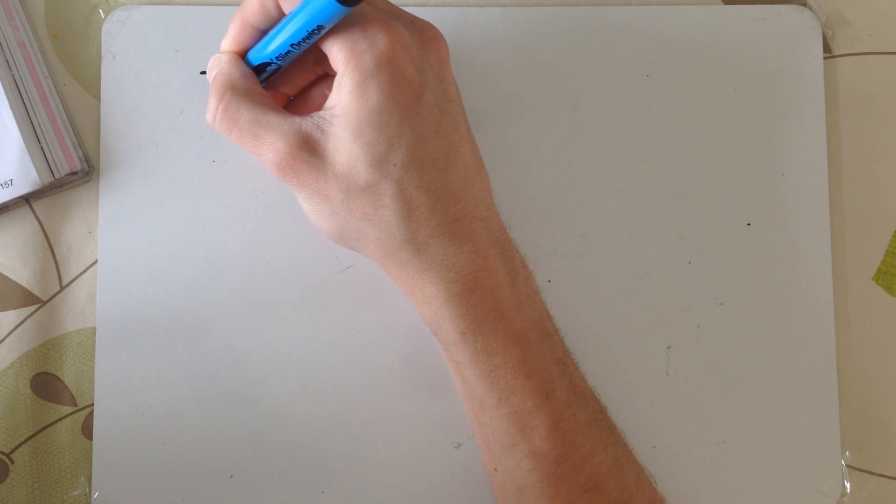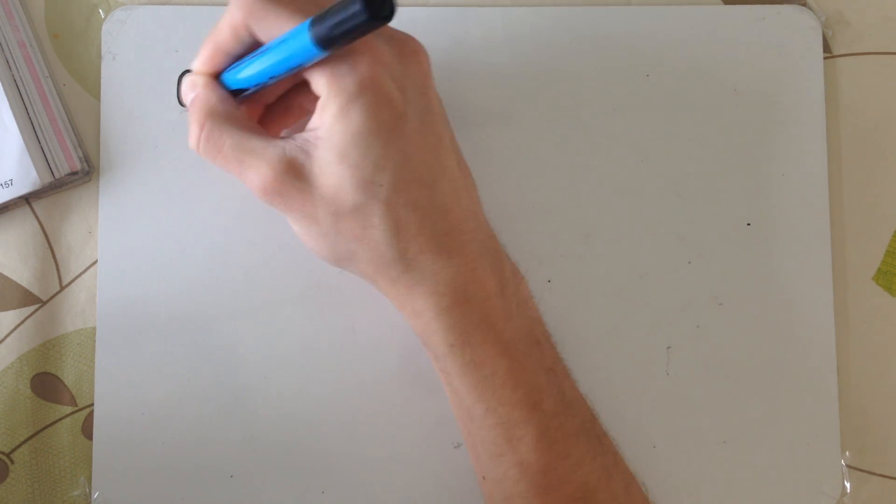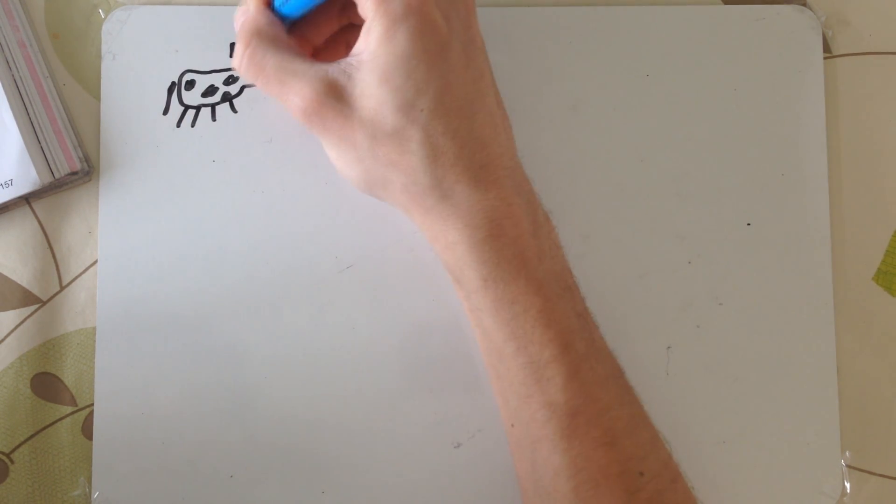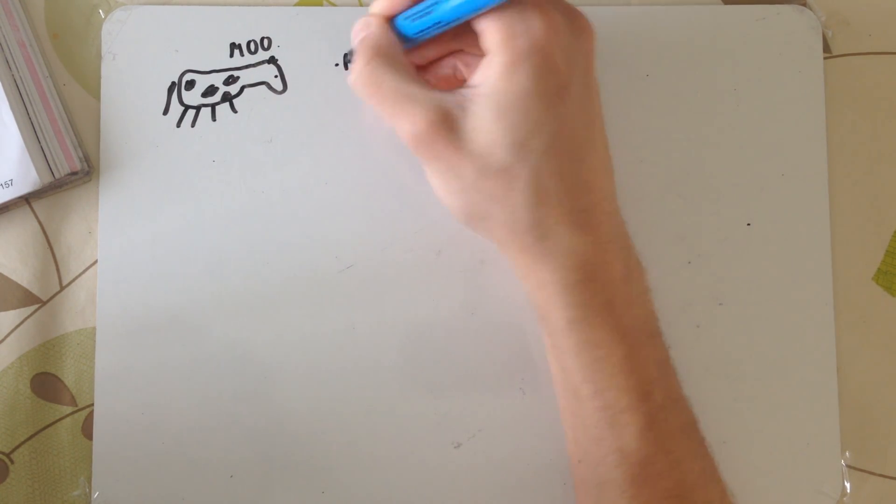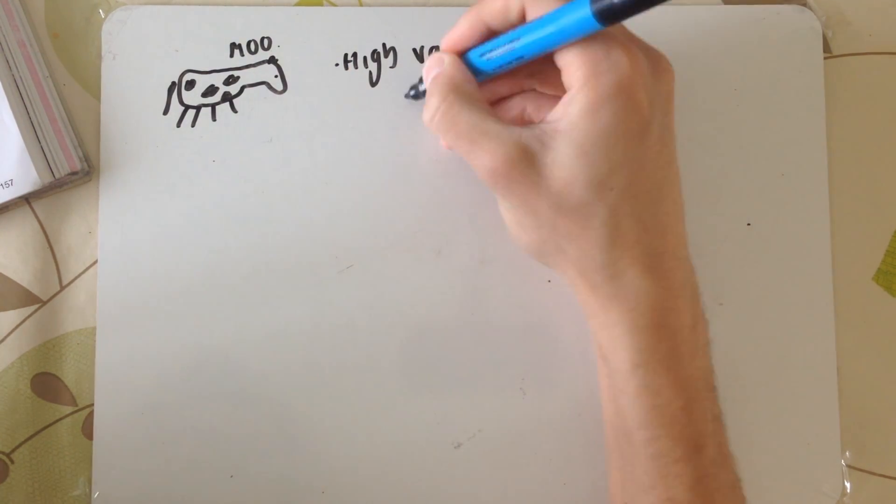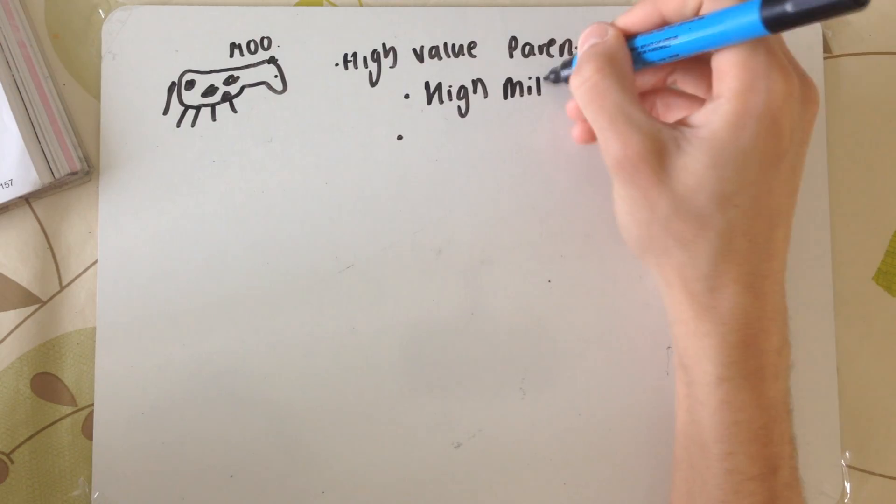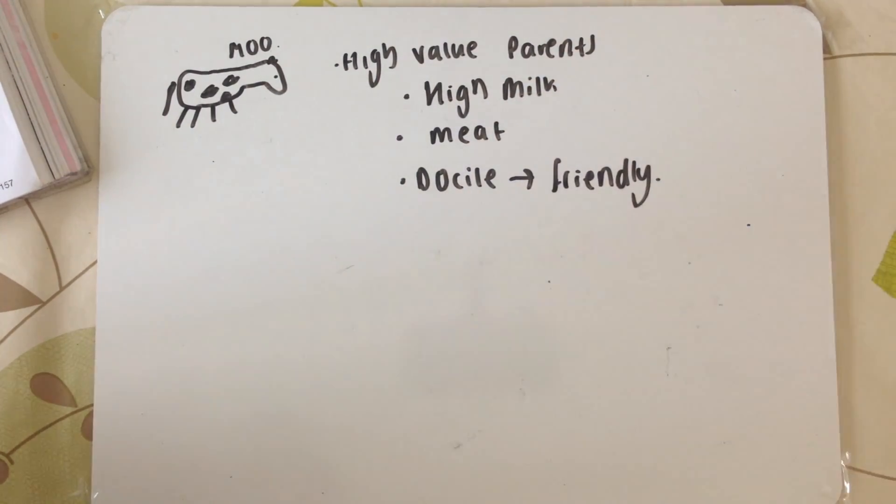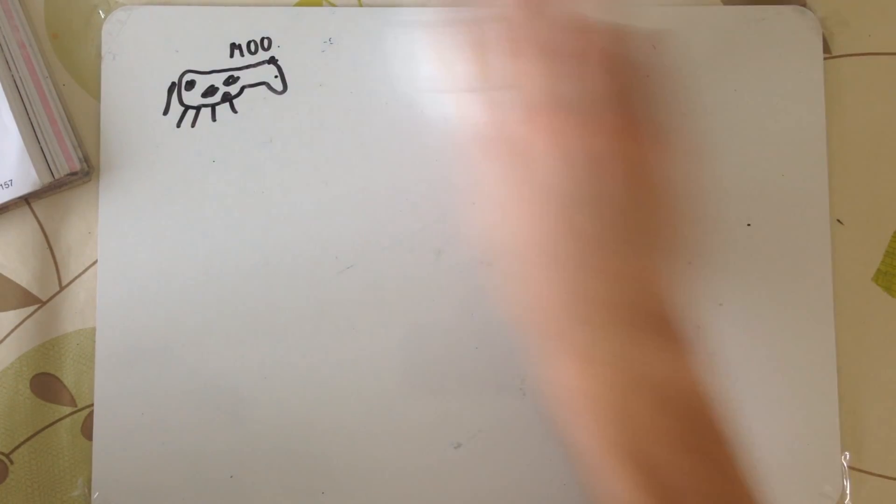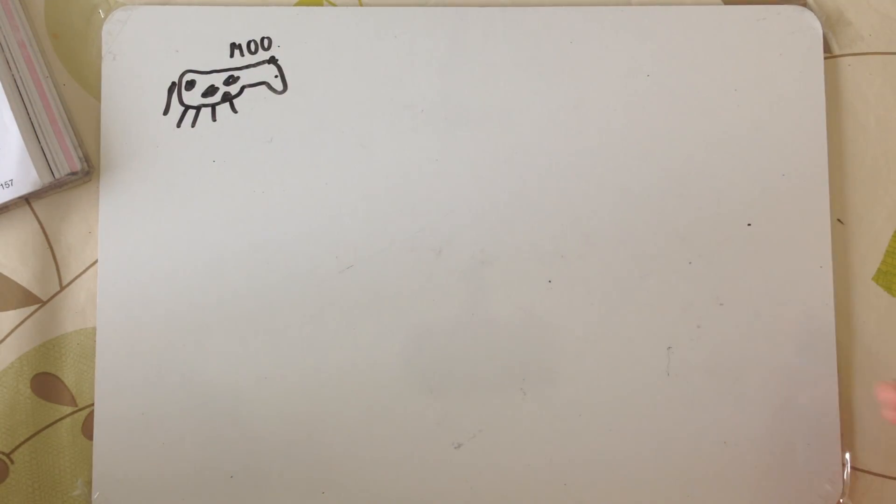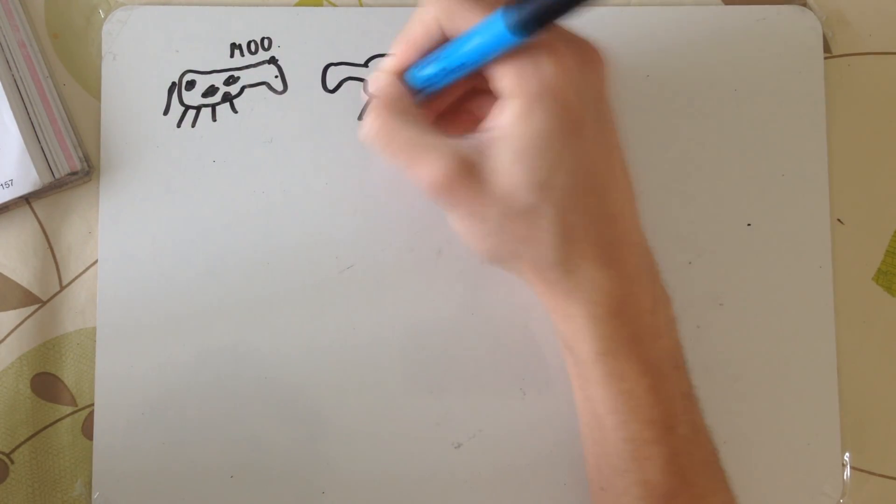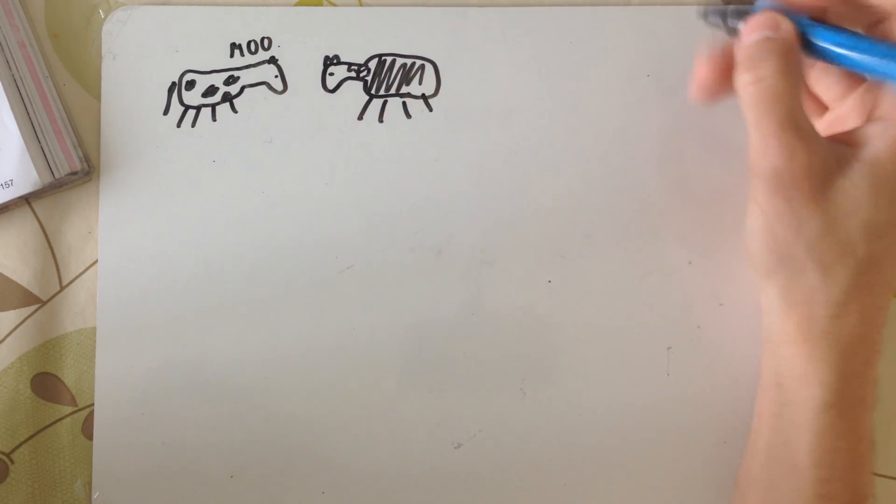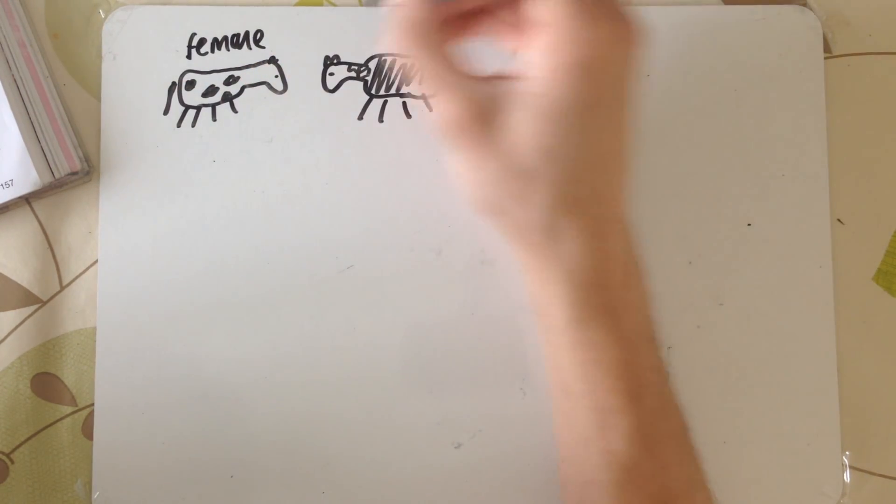For example, here we have a high value animal, starting with a cow. It's high value because it may produce high amounts of milk, have the best tasting meat, and be docile, which means friendly. These are things we look for when we select them. So we have our female cow and male bull, and we make them breed.